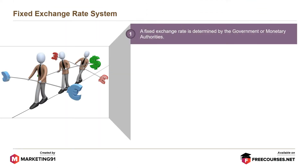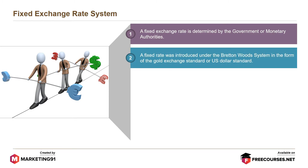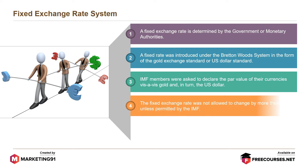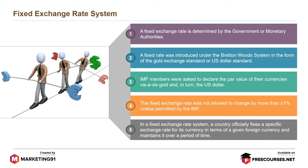A fixed exchange rate is determined by the government or monetary authorities. A fixed rate was introduced under the Bretton Woods system in the form of gold exchange standard or US dollar standard. IMF members were asked to declare the par value of their currencies vis-à-vis gold and in turn the US dollar. The fixed exchange rate was not allowed to change by more than 1% unless permitted by the IMF. In a fixed exchange rate system, a country officially fixes a specific exchange rate for its currency in terms of a given foreign currency and maintains it over a period of time.